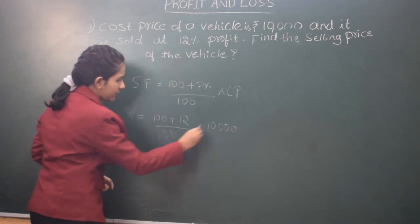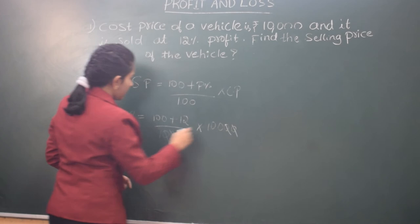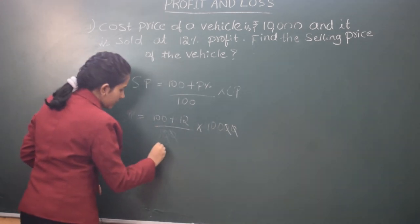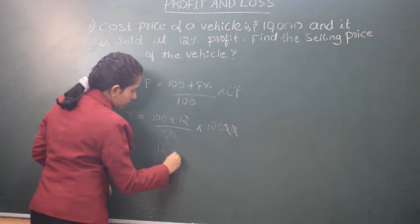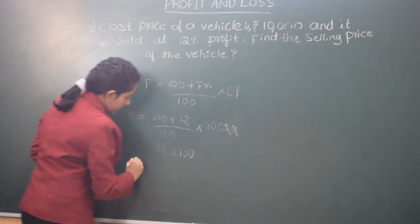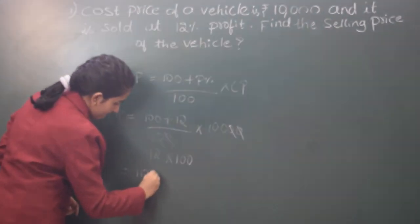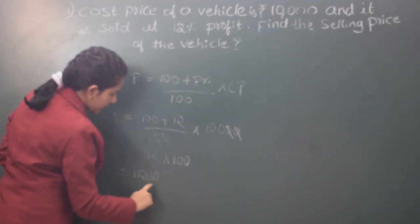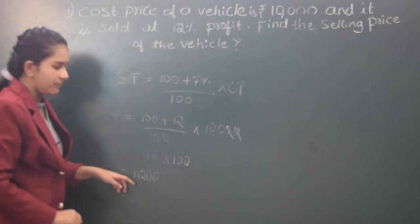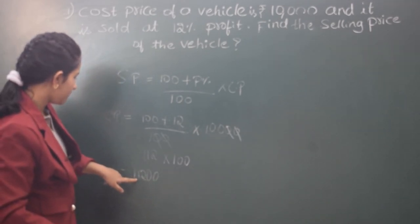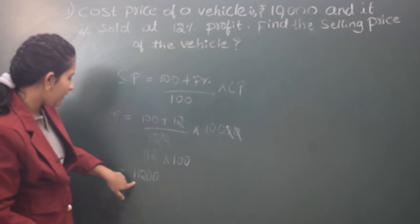So now we can cancel the zeros and 100 plus 12 is 112 into 100. So the answer is 11,200.